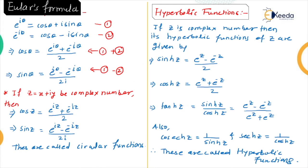The hyperbolic functions are analogous — we write cosh z and sinh z. For a complex number z, sinh z = (e^z − e^(−z)) / 2 and cosh z = (e^z + e^(−z)) / 2.